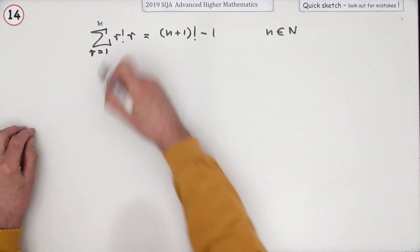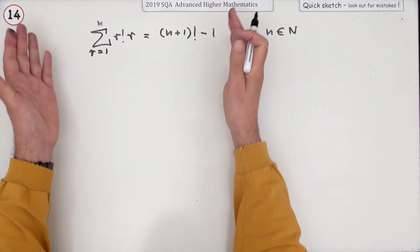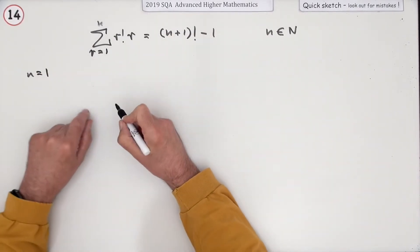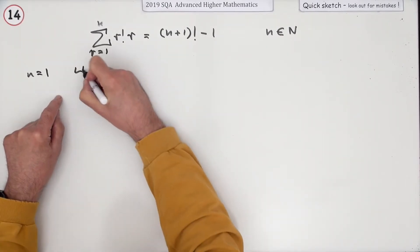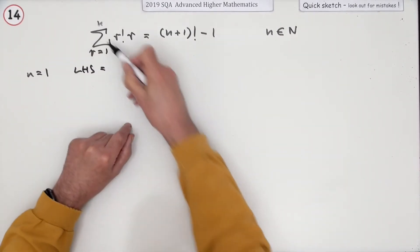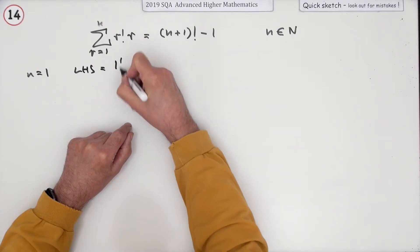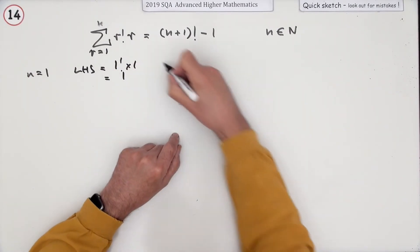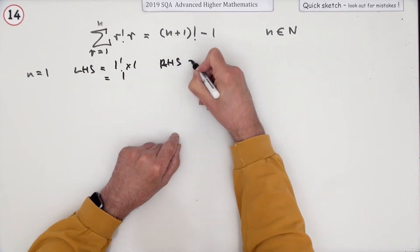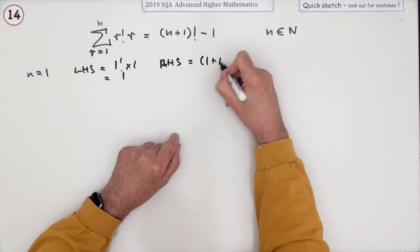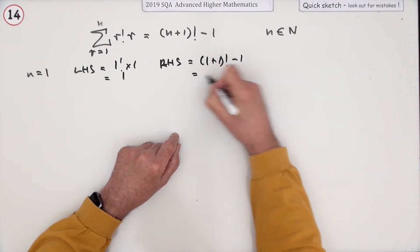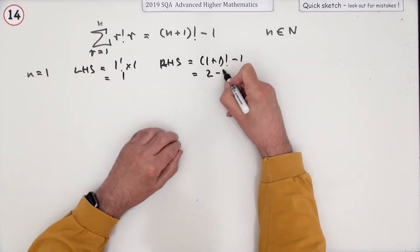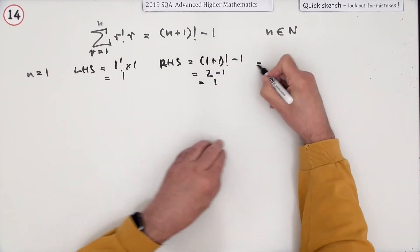The process is first of all check if it works in the first place at the start. Test it for n equals 1. Well, if n equals 1, on the left hand side, if it goes just from 1 to 1, that'll just be 1! times 1, which is 1. What happens on the right hand side? That will be (1+1)! minus 1. Now 2! is 2 times 1, that's 2. 2 minus 1, which is also 1.